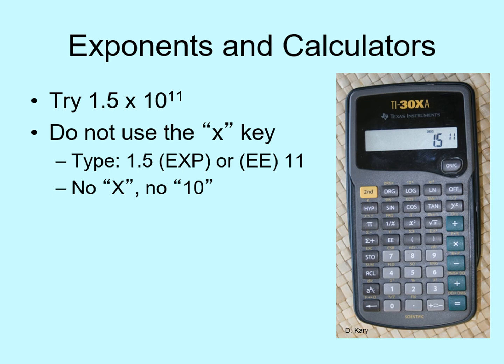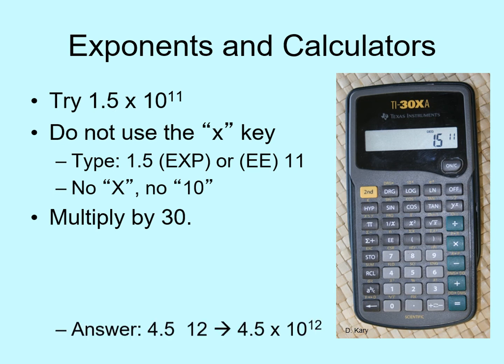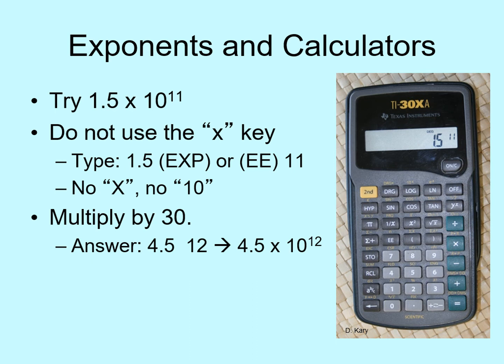Now that we've got an exponent in the calculator, we can do something with it. Neptune is 30 astronomical units from the Sun, so let's figure out how many meters that is. We multiply 1.5 times 10 to the 11th by 30. Make sure you've got 1.5 times 10 to the 11th in the calculator, then just hit times 30 and see what answer you get. Your calculator may read something like 4.5 and then a 12 after it — you should write that out as 4.5 times 10 to the 12th power.